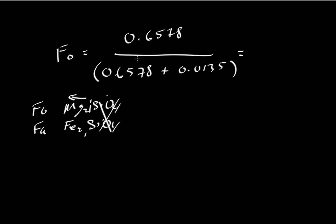And so here, we're looking at the total amount of magnesium. This is the amount of MgO relative to the amount of MgO plus FeO. And this calculation will come out to about 0.98, which means that the mineral that we analyzed has 98% forsterite.